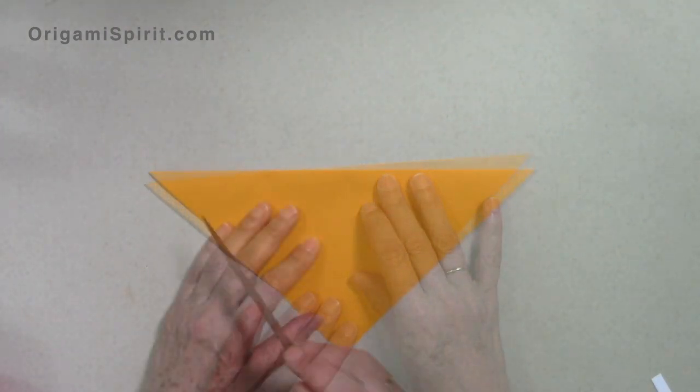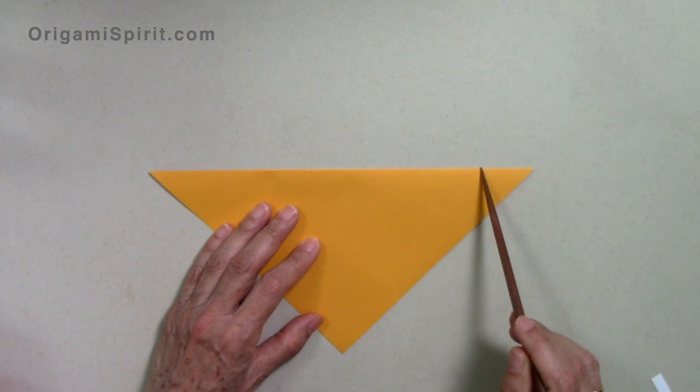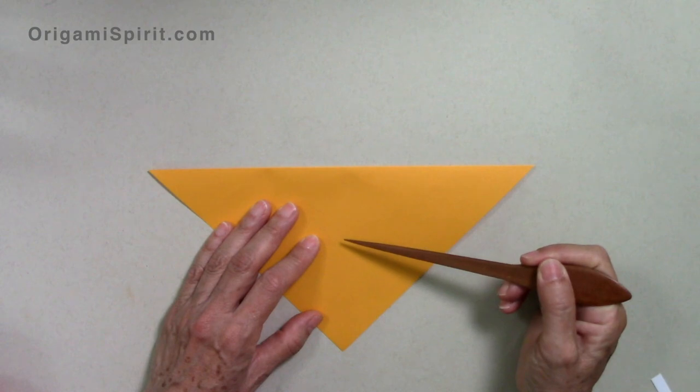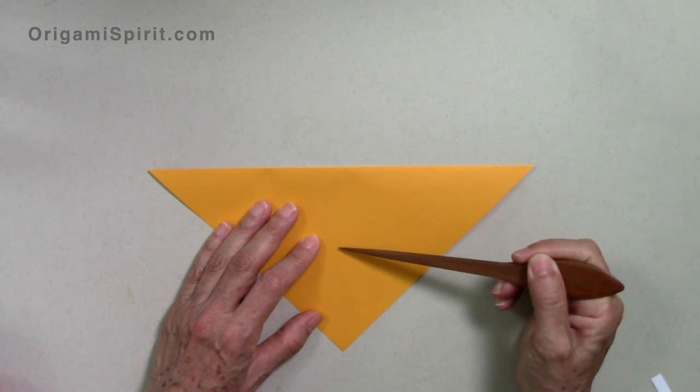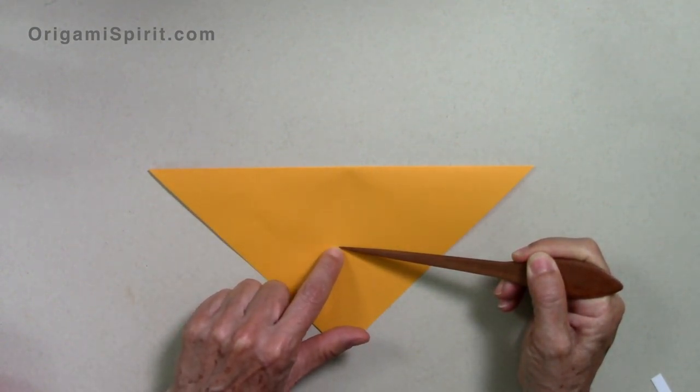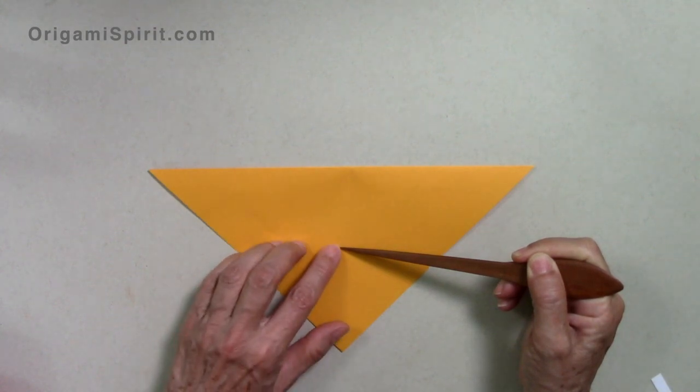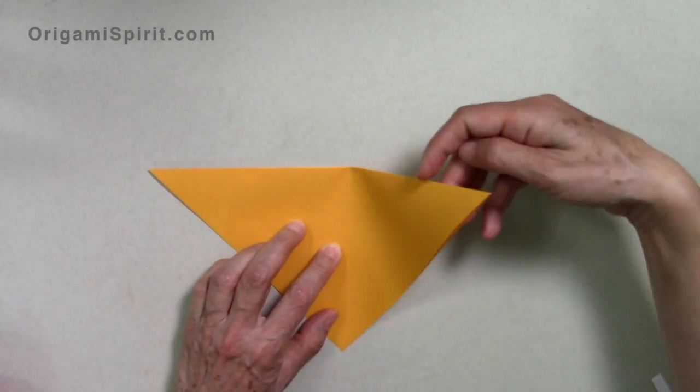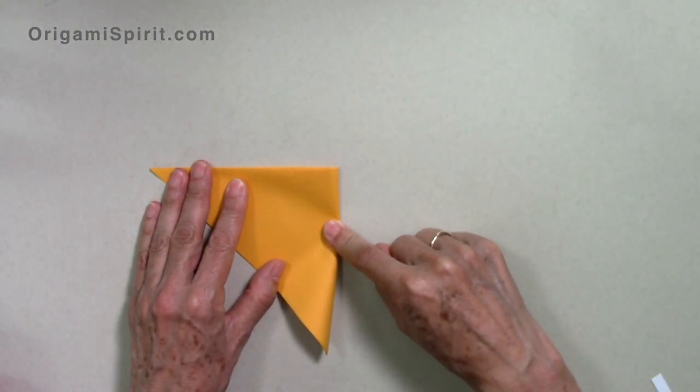Rotate. This folded edge is now up, and we are going to be making a fold from that folded edge to the center. It's a vertical fold, and it's only to about the center. We just calculate by eye. We bring the right corner to match the left corner and fold to the center.